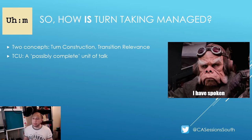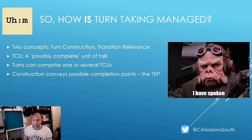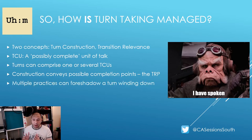The ways that turns are managed relate to both turn construction and transition relevance. With turn construction comes the concept of the turn-constructional unit, or TCU — a unit of talk that can be described as possibly complete. A fully complete turn at talk can comprise one or several TCUs, and it's in the construction that we can get an indication of possible completion points. These possible completion points are called transition relevance places, or TRPs. This is where there is a possibility for a change in speaker, although the presence of a TRP does not guarantee that this change will actually take place.